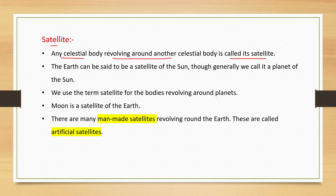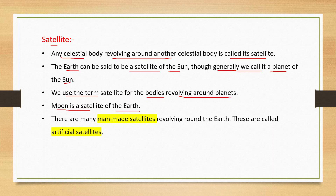A natural body that revolves around a planet is called its satellite. The Earth can be said to be a satellite of the sun according to this definition, although generally we call it a planet. We use the term satellite for bodies revolving around planets. For example, the moon is a satellite of the Earth. There are also many man-made satellites revolving around the Earth; these are called artificial satellites.